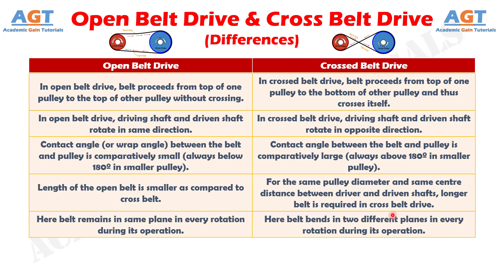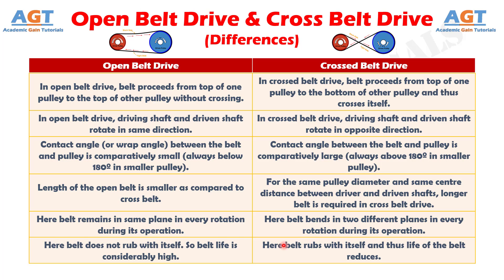Number 5: in open belt drive, the belt remains in the same plane in every rotation during its operation. Number 6: in open belt drive, the belt does not rub with itself.